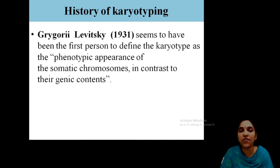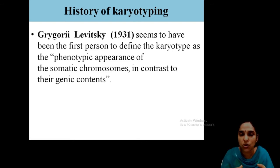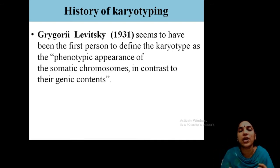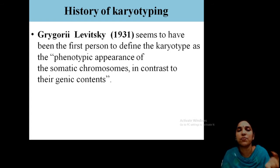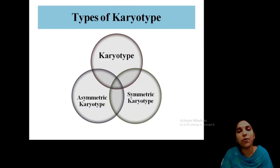Karyotype history: Levitsky was the first person to define karyotype as the phenotypic appearance of somatic chromosomes, in contrast to their genetic constitution. We observe the metaphase stage during mitosis or meiosis, spread and stain the chromosomes, observe under the microscope, photograph them, cut out the photographs according to size, arrange them, and paste them on paper — that is the oldest form of karyotyping. The observation diagram is called the ideogram, first described by Levitsky in 1931.